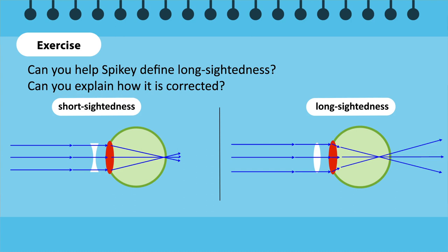In long-sightedness objects close to the eye are blurred, but objects that are far away can be seen clearly. In this condition, the cornea and lens converge light rays from nearby objects to a point behind the retina. In other words, the light rays do not converge quickly enough. A lens is needed to converge the rays before they enter the eye. Therefore, we wear convex lenses to correct long-sightedness.